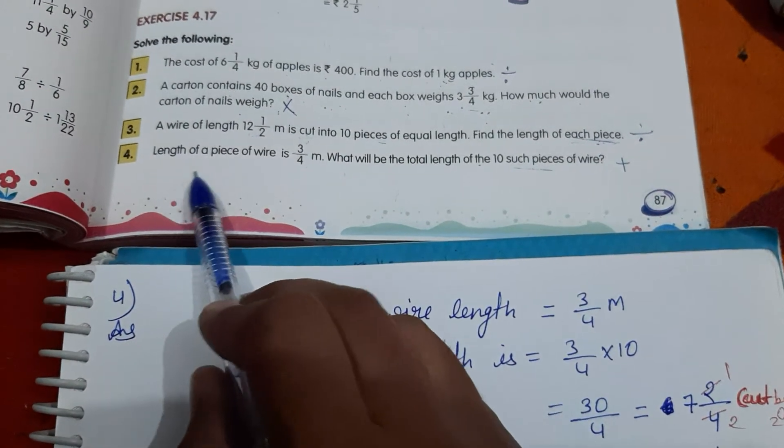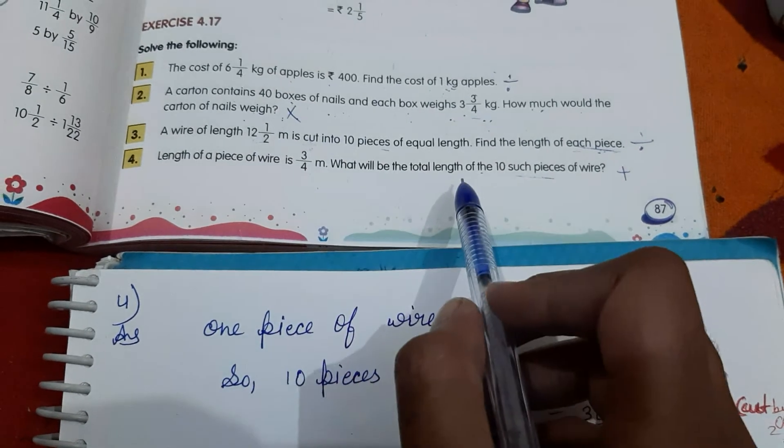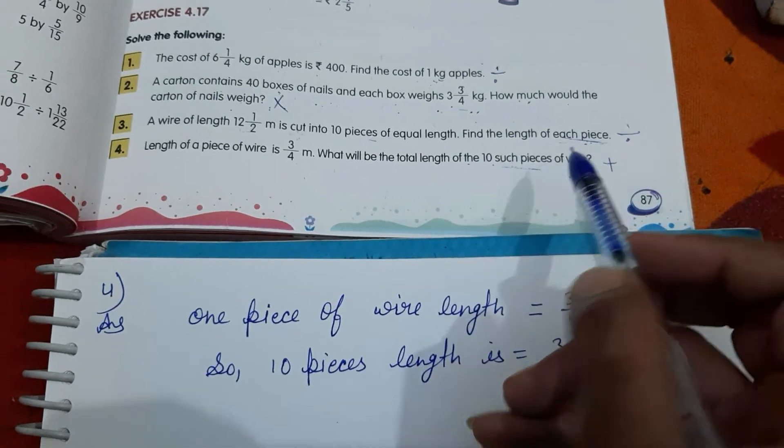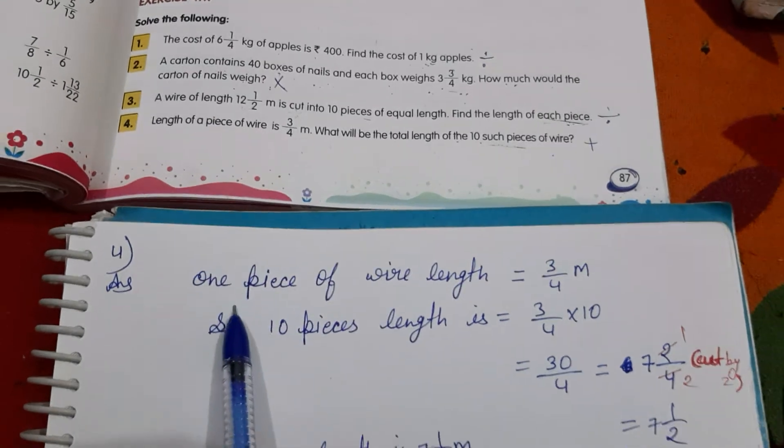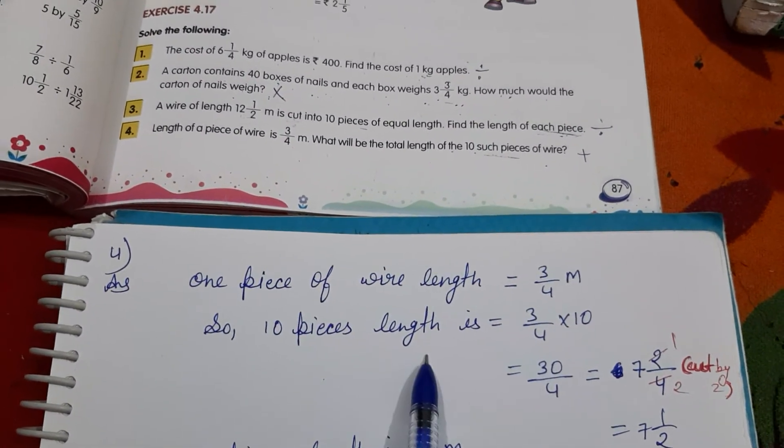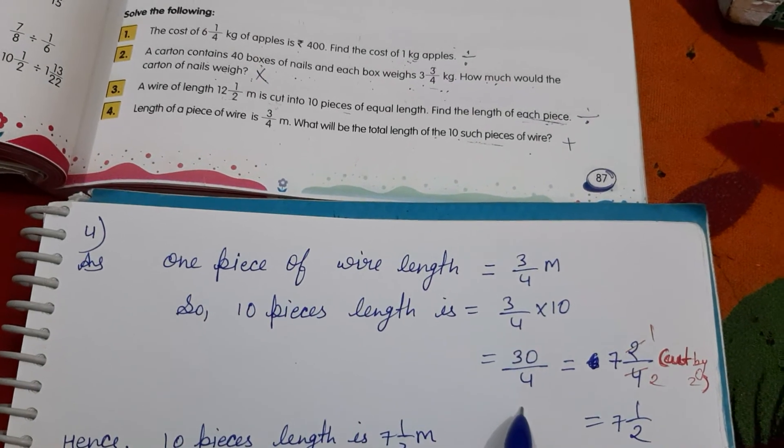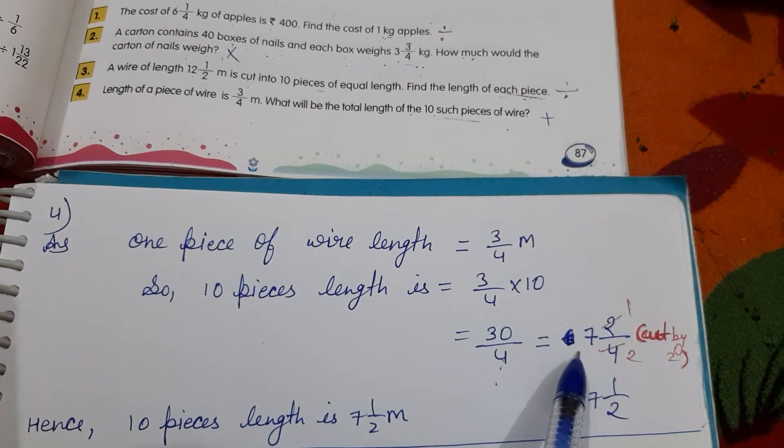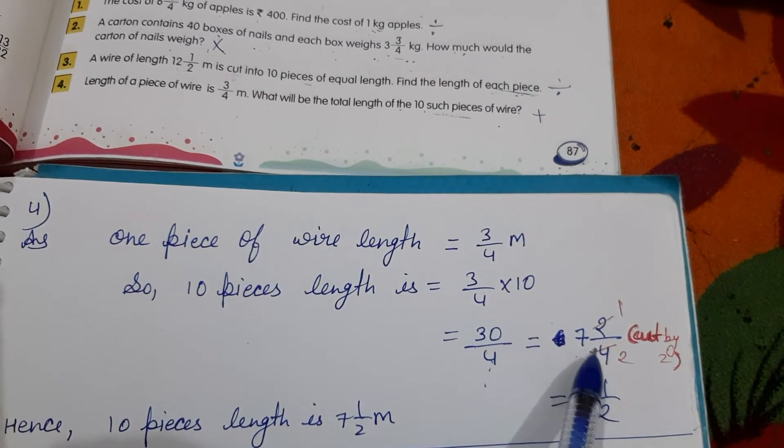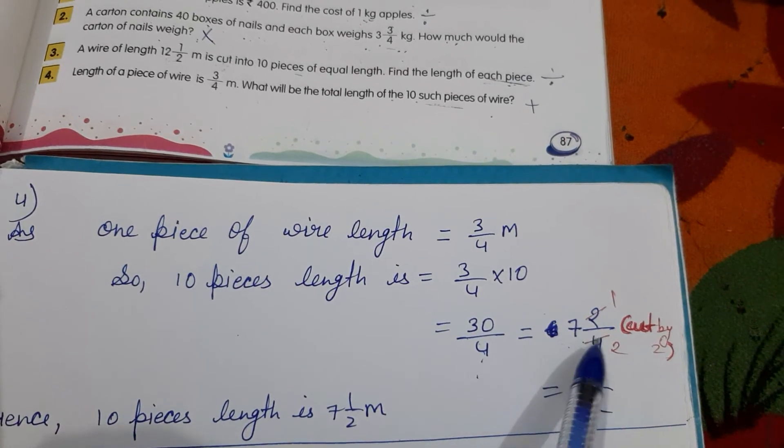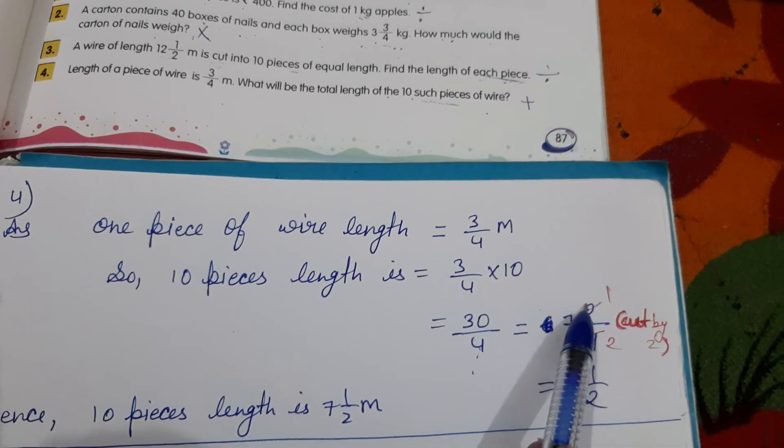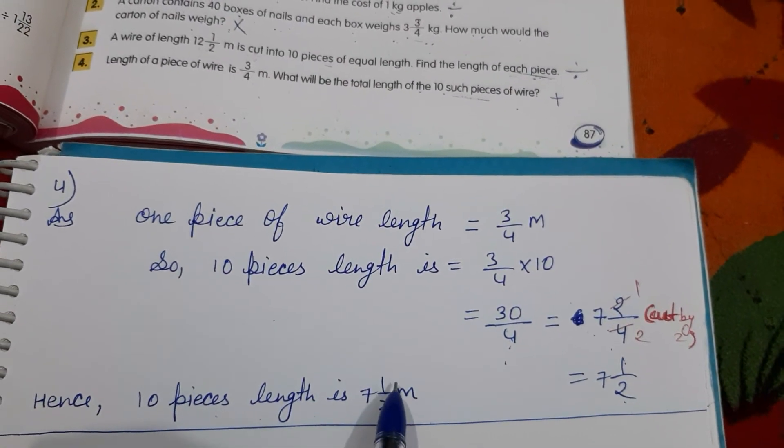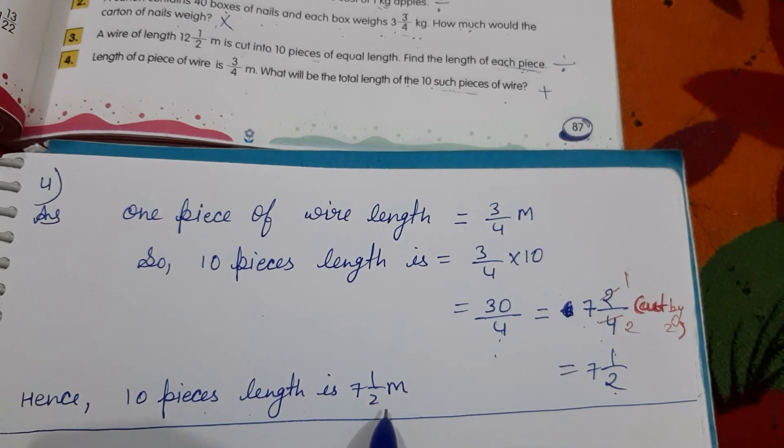Question number 4. Length of a piece of wire is 3 by 4 m. Find the total length of 10 such pieces. 10 ki piece ka apne ko pata lagana hai. To yaha pa apne kya karengi? Multiply. One piece, yani ek piece ki length di rakhi wire ki 3 by 4. 10 pieces ki kitni hogi? So we have to do multiply, 30 upon 4. Here you can make a lowest term. Nahi banana? Toh mix fraction me directly change kar do. After changing to mixed fraction, here I did the process of directly changing to mixed fraction. So 7 2 upon 4. 2 upon 4 easily we can cut by 2. Kyunki 2 ki table mein 2 bhi aata hai, 4 bhi aata hai. How many times? 1 upon 2 times. So that answer is 10 pieces length of wire is 7 1 upon 2 meter.